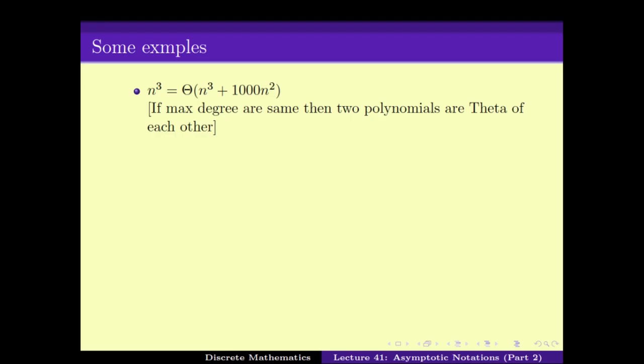If somebody says the running time of some function is n cubed plus 1000n squared, you can say it is Theta of n cubed. Similarly, n to the power 4 is small o of 2 to the power n — meaning as n goes to infinity, n to the power 4 is way, way smaller than 2 to the power n. In fact, any polynomial is small o of any exponential. So n to the power 1000 is small o of 2 to the power square root of n.